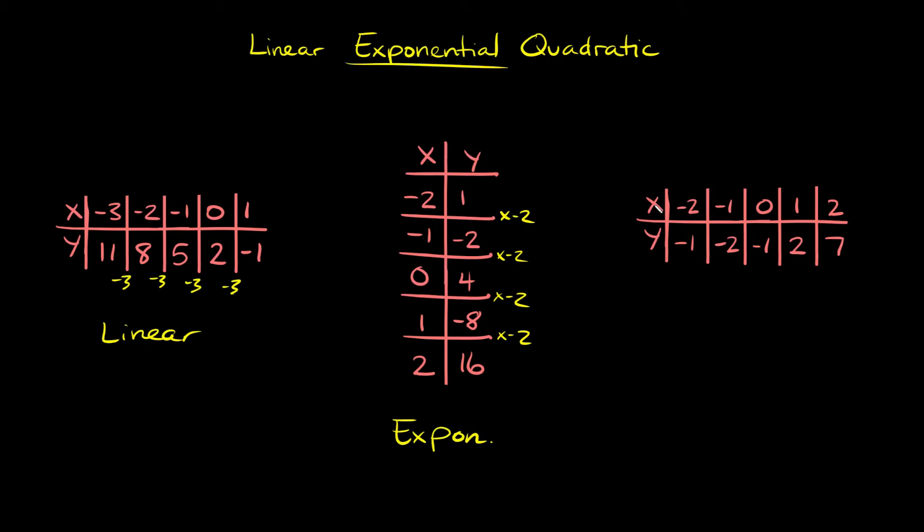And then lastly, here you can see our x values are constant again: negative 2, negative 1, 0, 1, 2. But then we want to look at the y's. So y is negative 1, negative 2, negative 1, positive 2, positive 7.